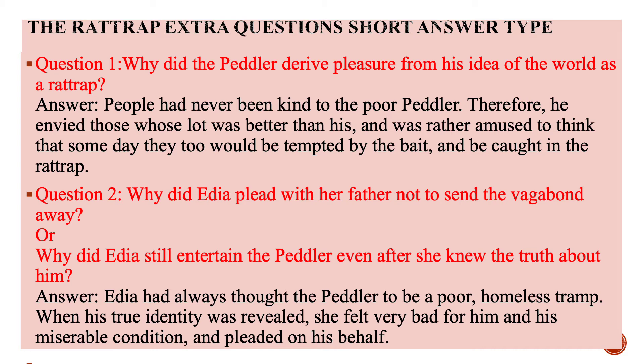Short answer type questions. Question number one: Why did the peddler derive pleasure from his idea of the world as a rat trap? Answer: People had never been kind to the poor peddler. Therefore he envied those whose lot was better than his, and was rather amused to think that someday they too would be tempted by the bait and be caught in the rat trap.